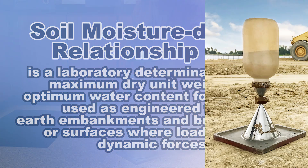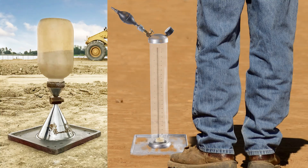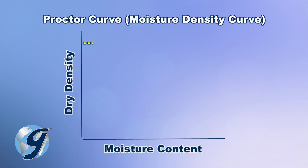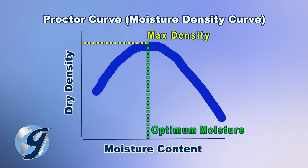The sand cone test method, rubber balloon test method, and nuclear density test method are three common field tests that, when compared to the laboratory proctor test results of the same soil, a ratio of percent compaction can be determined that is reliable and accepted by infrastructure design teams and regulatory authorities.